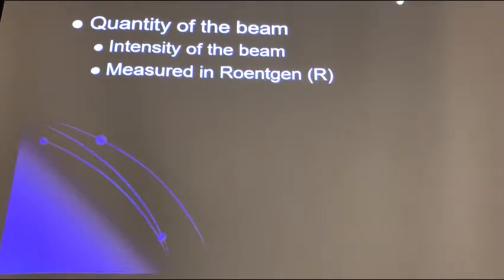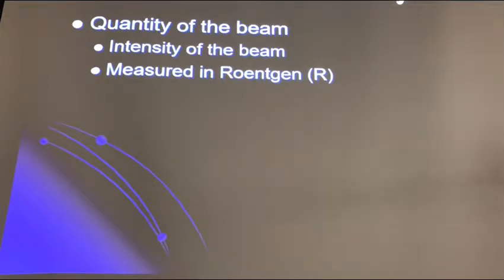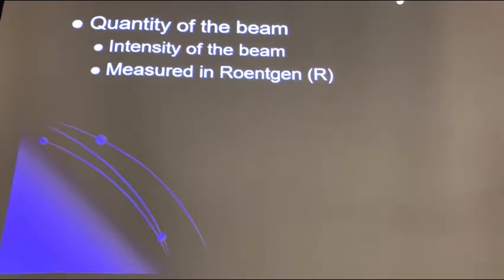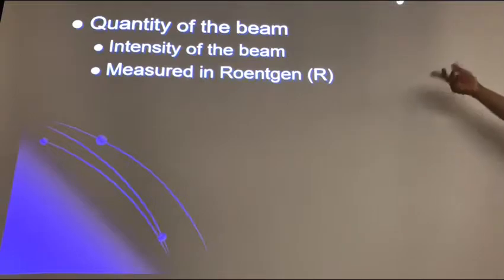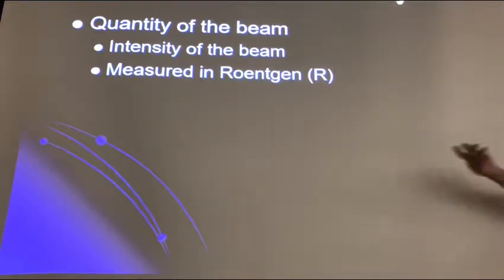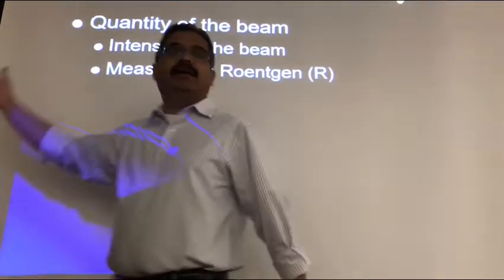Quantity and quality. By the way, about 70% of what we're going to cover in this section I've already talked about throughout the semester, so it shouldn't be too complicated. For example, quantity of the beam — we already talked about intensity of the beam. What controls that? MAS, KVP, and distance.